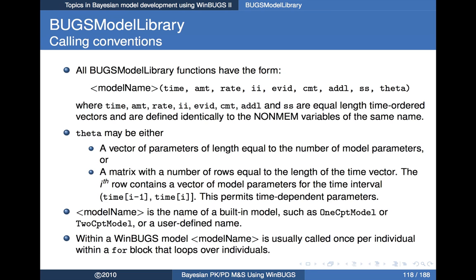This is an attempt to describe what I term the calling conventions — the way you call a Bugs Model Library function inside WinBugs. If this starts sounding cryptic as we describe it in the abstract, it'll be more concrete when we walk through an example shortly. All Bugs Model Library functions have the same form: you give a model name — for example, 2CPT model is the name of the built-in model for the two-compartment model with or without first-order absorption — and then a list of arguments. There are nine arguments. The first eight are the data items you're used to from NONMEM: time, amount, rate, II for interdose interval, EVID, compartment, ADDL, and SS.